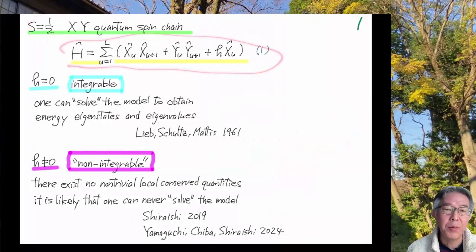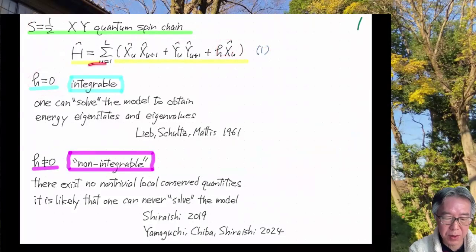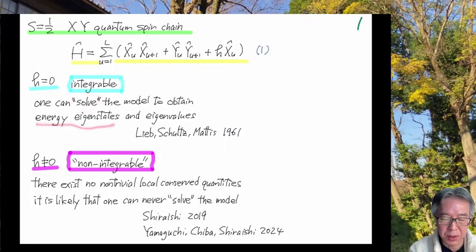I'm going to define this carefully, but anyway, this is the Hamiltonian. So here's the interaction, and here's the magnetic field in the x direction. And I claim that if this magnetic field term is vanishing, then this model is integrable in the sense that one can rather easily solve this model to get exact energy eigenstates and eigenvalues. And this is actually a classical work done by Lieb-Schultz-Mattis back in 1961.